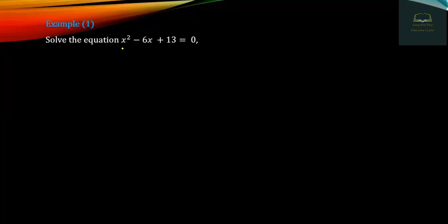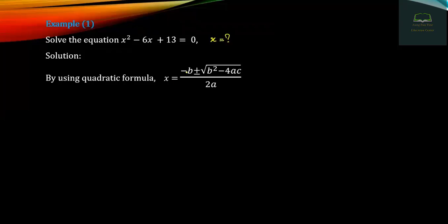In the first one, we will solve the equation. A squared minus C x plus equals zero. We will solve the equation. The quadratic formula is A squared minus B plus minus square root of B squared minus. A squared plus B plus C equals zero. We will solve the equation here.